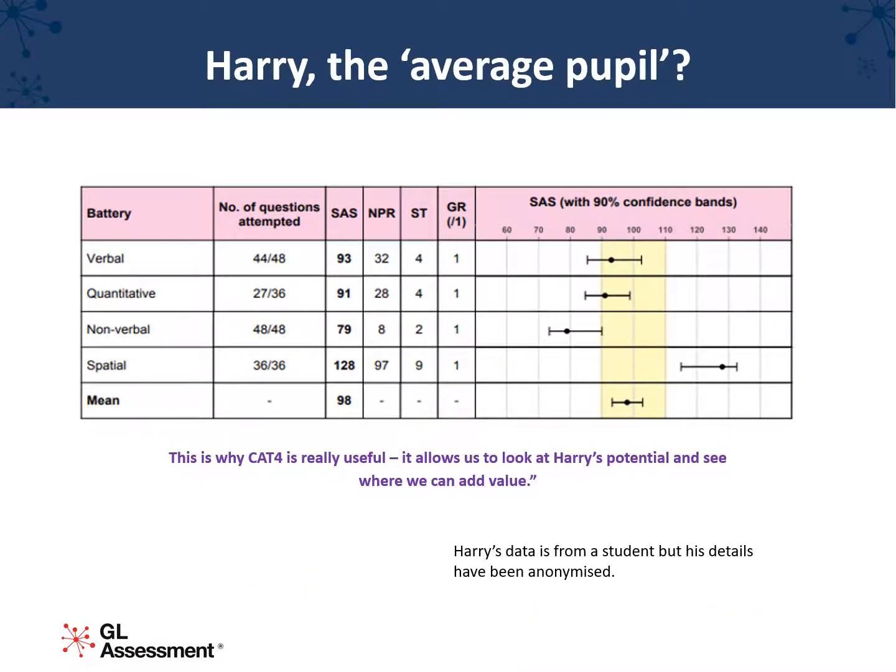CAT4 looks at four cognitive areas or types of reasoning. These represent the way that people take on new information and work with it. There is an overall ability score for each student, but what's more interesting is the comparison between the four areas, which gives insights into individuals' cognitive strengths and weaknesses.